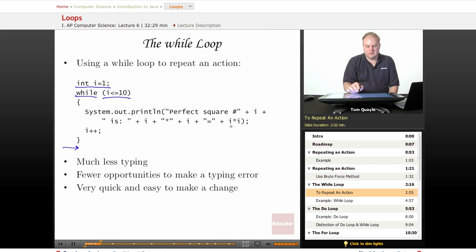For example, the first time through the loop, I will print perfect square number 1 is 1 times 1 equals 1.